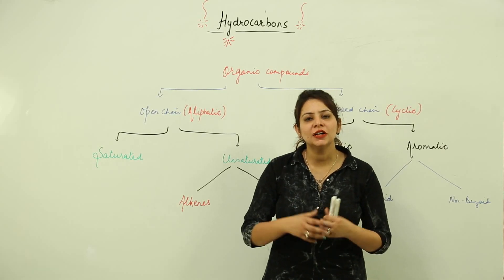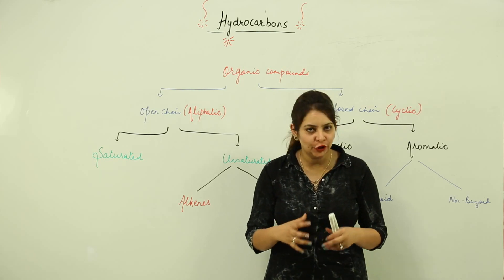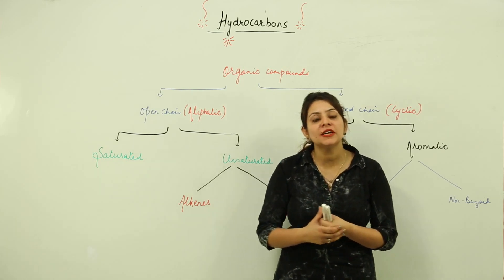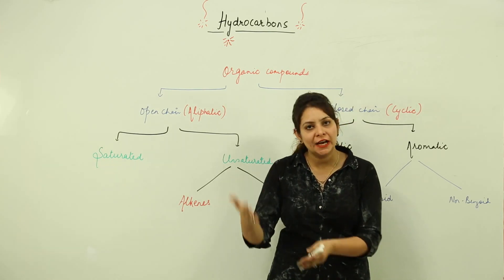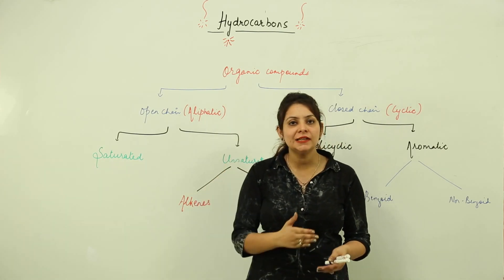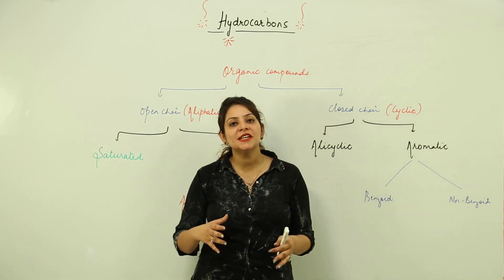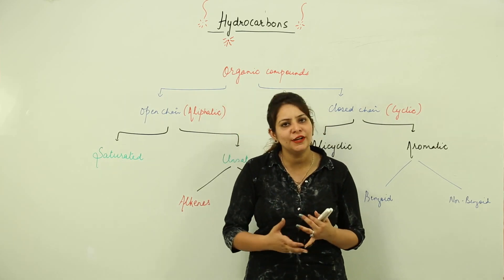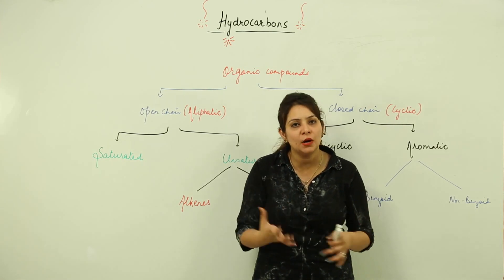We are going to start the classification of organic compounds. As you all know, organic compounds are those compounds which are mainly made up of carbon. They contain carbon and may contain hydrogen or some other elements, but the main criteria is that they should contain carbon. Carbon possesses certain important characteristics like catenation, tetravalency, and allotropy that make it so versatile in nature.